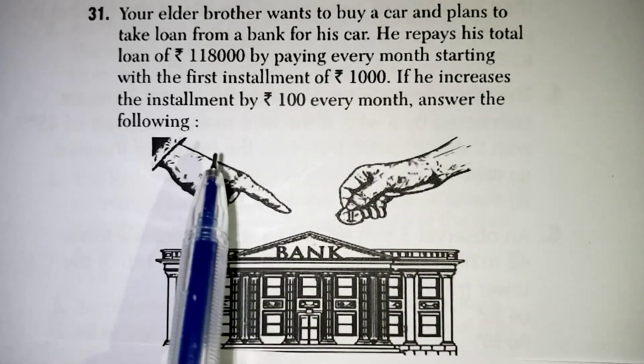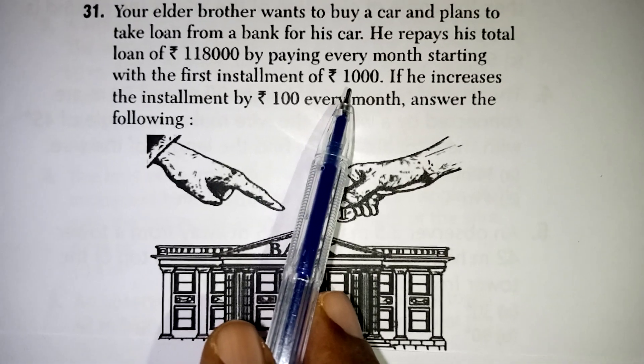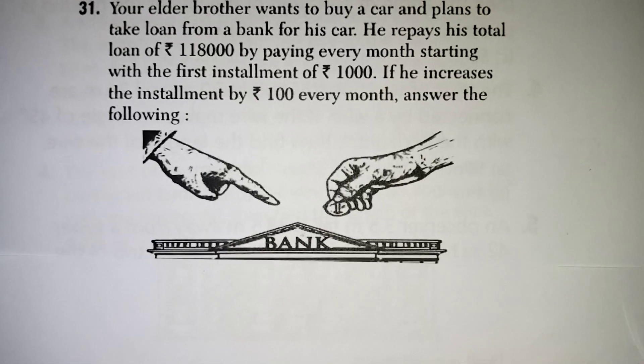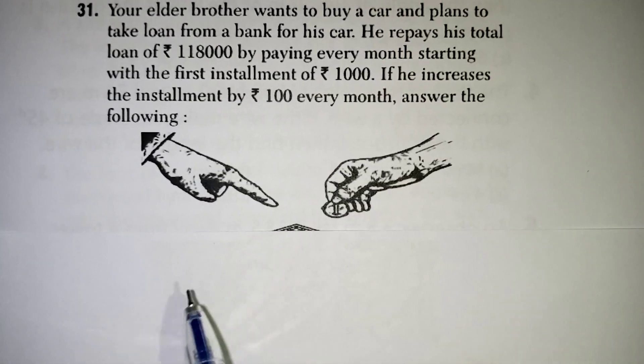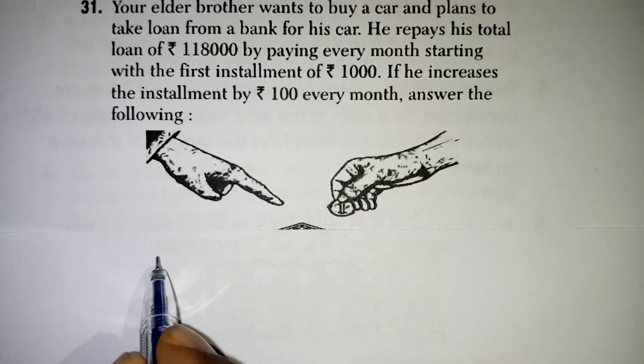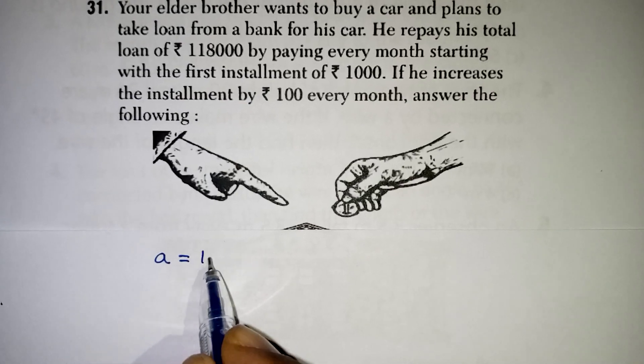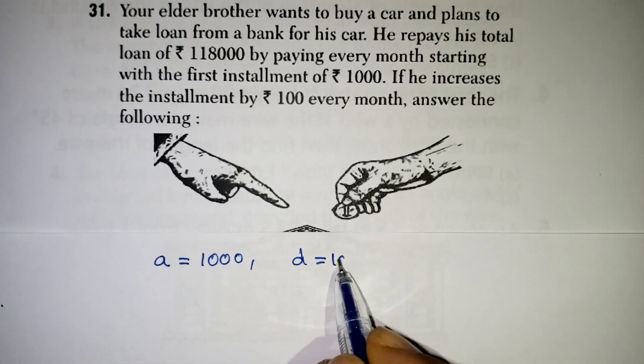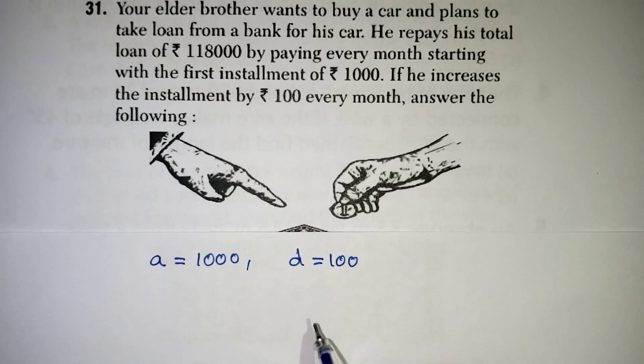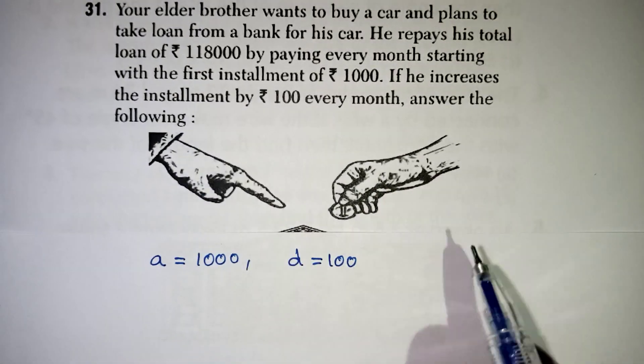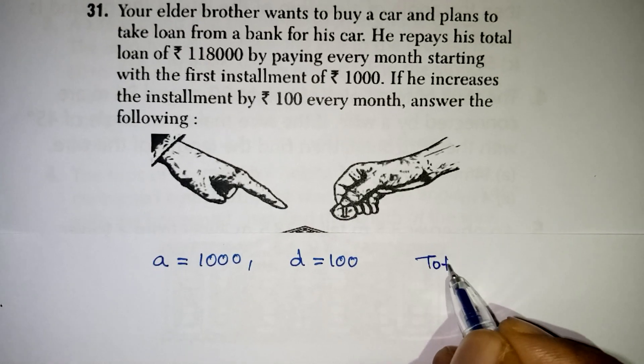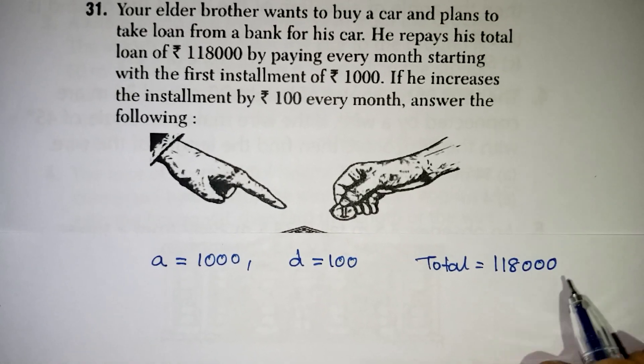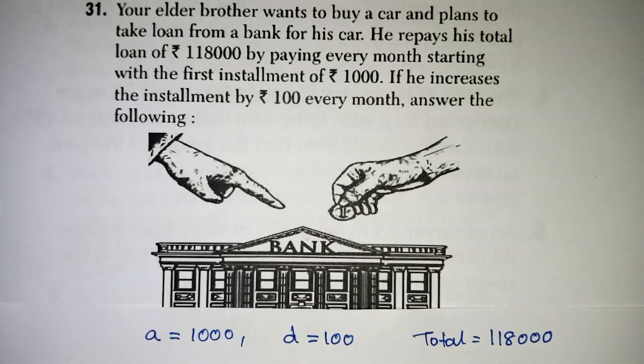So, he started the installment with the amount Rs. 1000. Every month he is increasing it by Rs. 100. By looking at the question, it is understood the first term is Rs. 1000 and every month the difference is going to be Rs. 100. So, D is Rs. 100 we should take. Total amount he should pay to the bank is Rs. 1,18,000. These are all the conditions given to us. We will go for the question now.